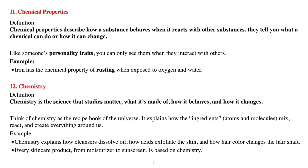Number eleven, chemical properties. Chemical properties describe how a substance behaves when it reacts with other substances — they tell you what a chemical can do or how it can change. Like someone's personality traits, you can only see them when they interact with others. For example, iron has the chemical property of rusting when exposed to oxygen and water.